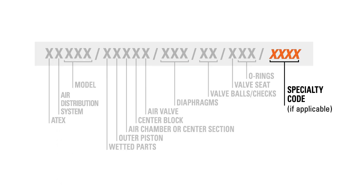The final section of the model designation identifies the specialty code of the pump. The specialty code consists of four numerical digits that are specific to the options for that pump. This section is blank for pumps that do not have a specialty code associated with them.